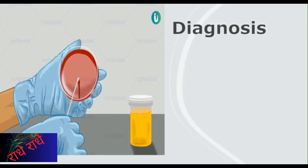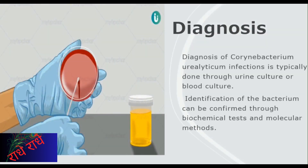Diagnosis of Coronybacterium ureoliticum infections typically requires a urine culture or a blood culture. Biochemical tests and molecular methods can also be used to confirm the presence of the bacterium. These tests can determine the type of infection, so that the correct treatment can be administered.